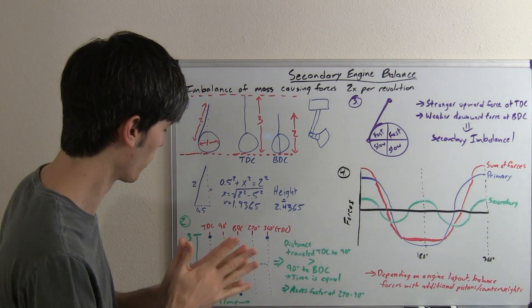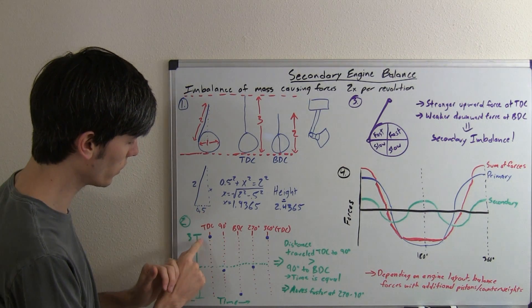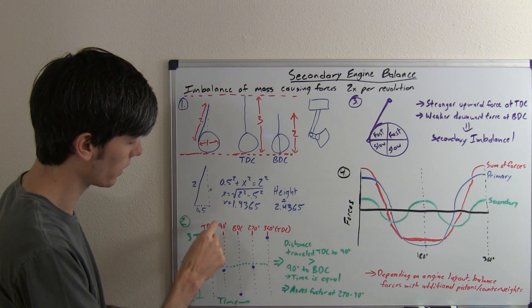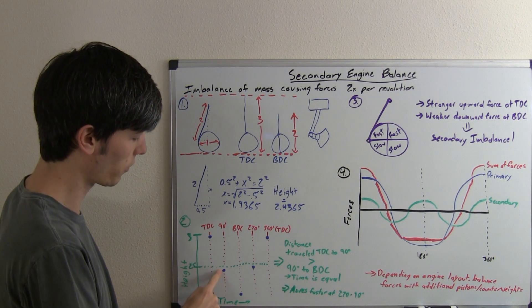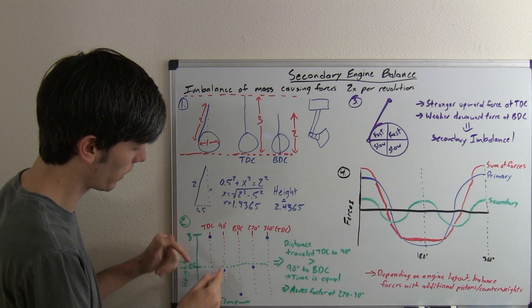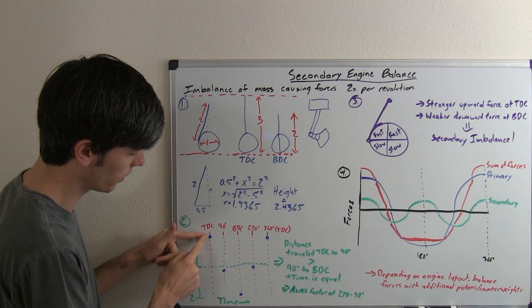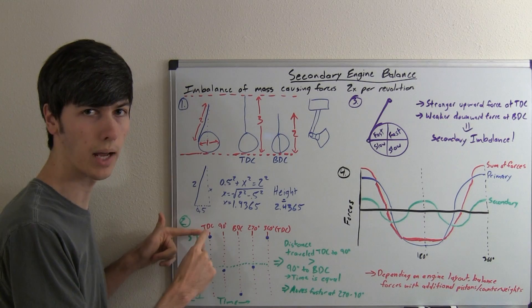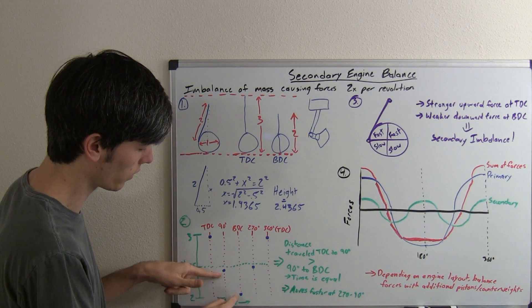So why is that interesting? Well, if you look at the height versus time, you can see that when you're at top dead center, here you are at a height of 3. When you rotate that crank 90 degrees, then you're at a height of 2.4365. Now that's not 2.5, that's not halfway between top dead center, and then when you hit the bottom dead center, you're at 2. So what's happened is, the piston has traveled a greater distance as it's rotated the 90 degrees from top dead center to 90 over than it has from 90 degrees to bottom dead center.